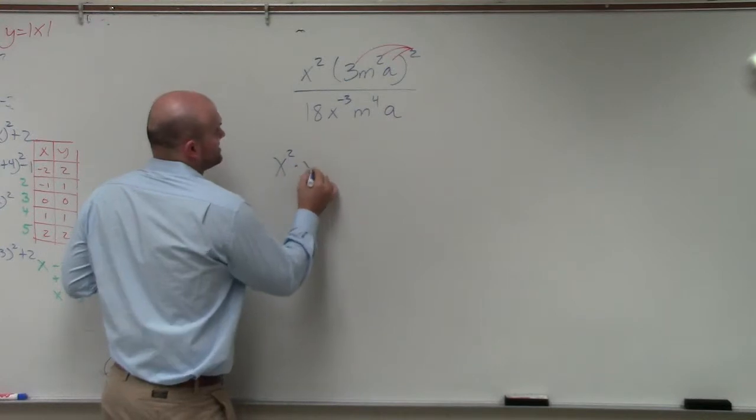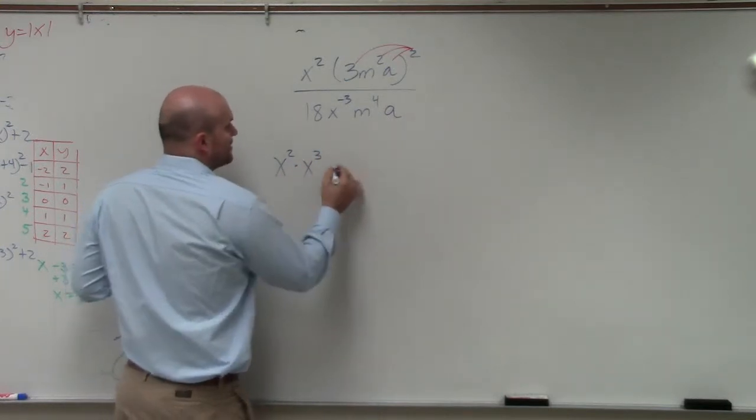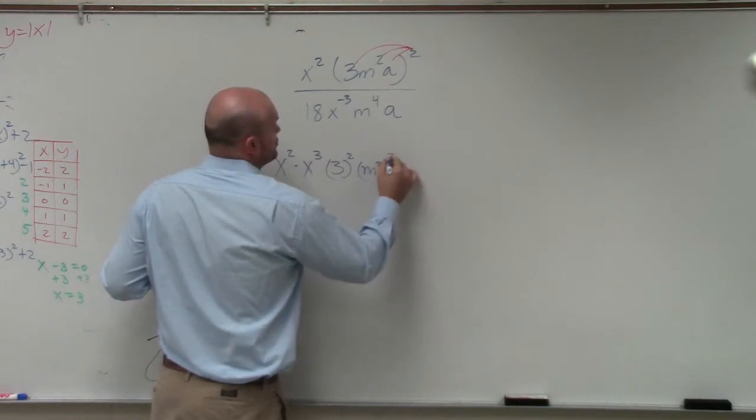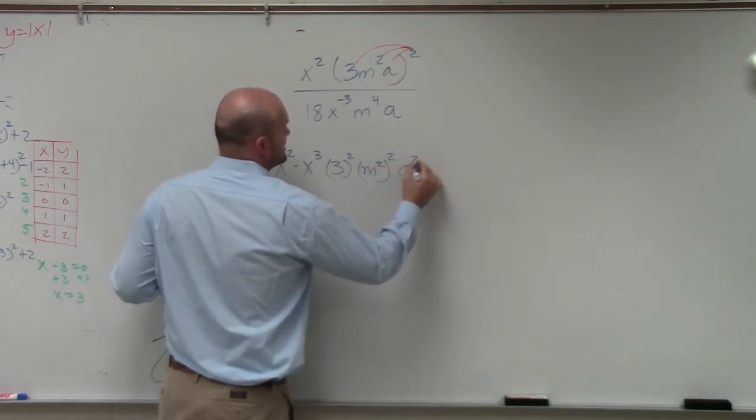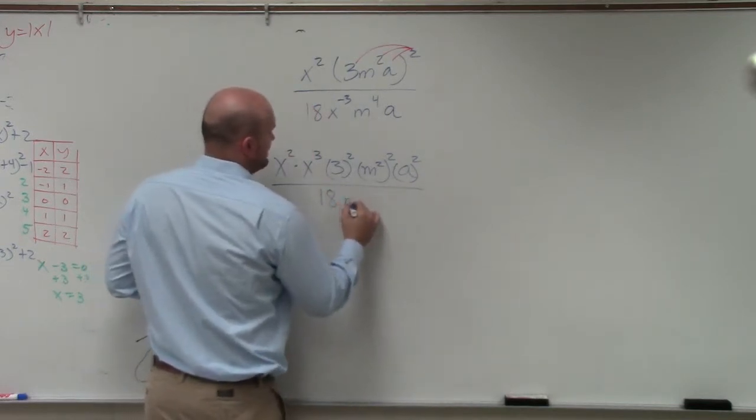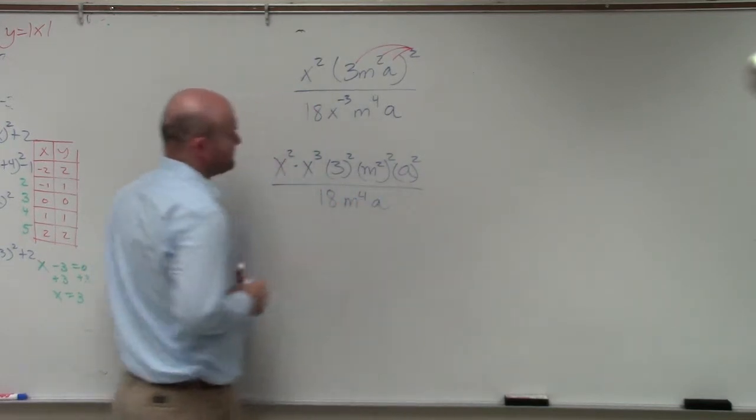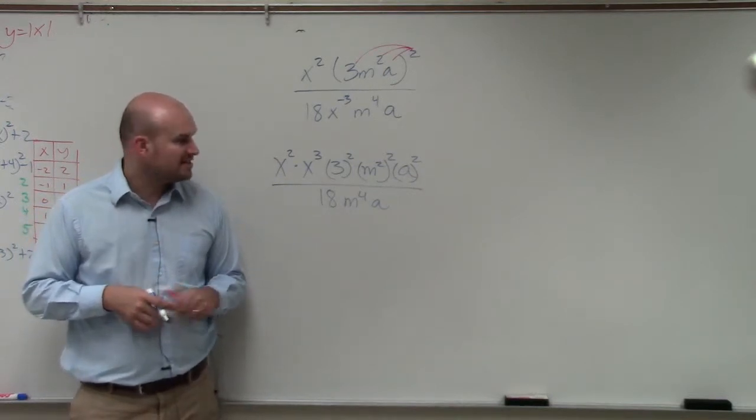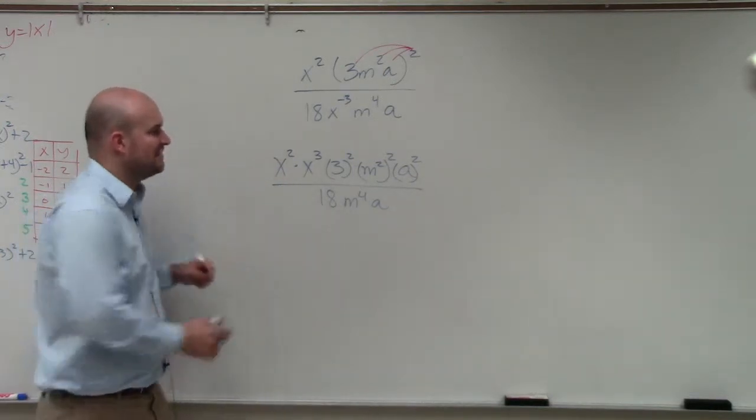So I have x squared times x to the positive third. Then I have 3 squared m squared squared. And then a squared. All over 18 m to the fourth a. Everybody follows me? OK. I just wanted to show you this step. Now let's go ahead and simplify.